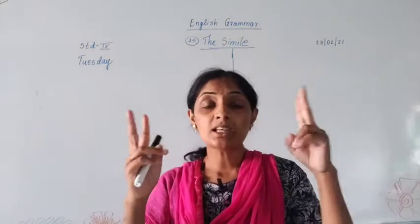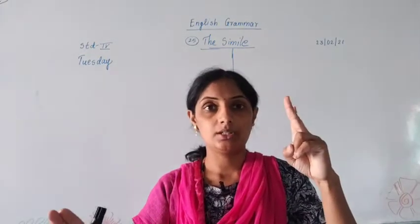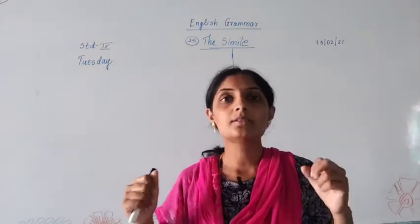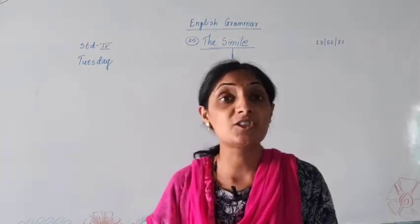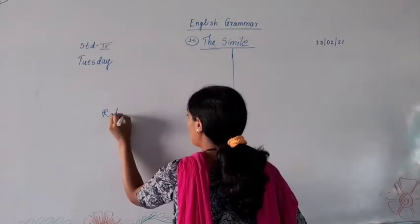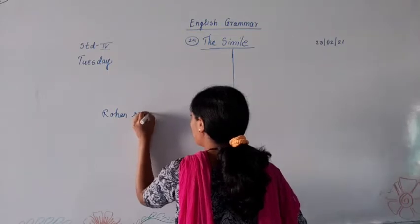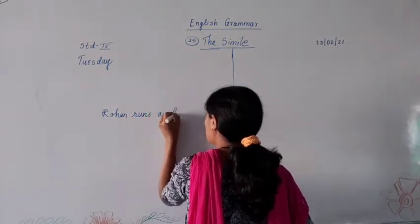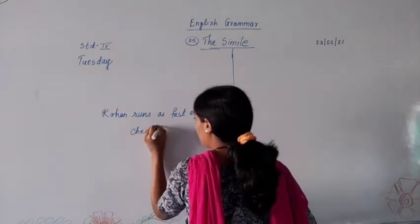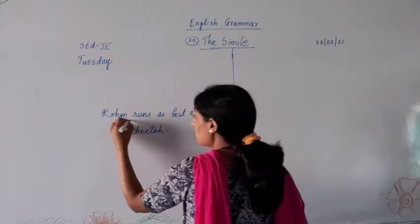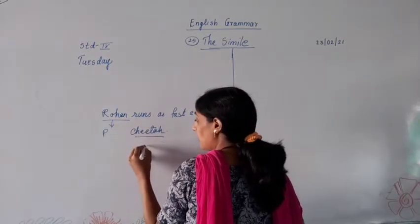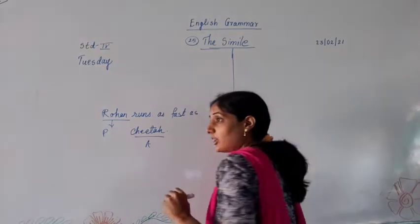Simile means comparison is done between two nouns. For example, Rohan runs as fast as Cheetah. So comparison is done between two nouns — Rohan is the name of a person and Cheetah is the name of an animal.